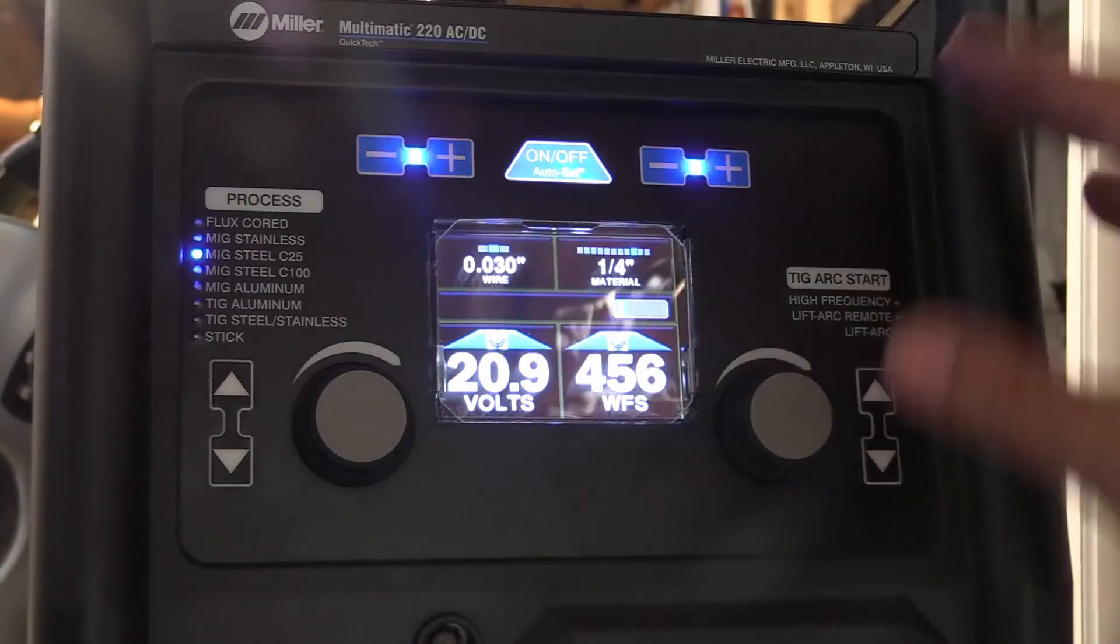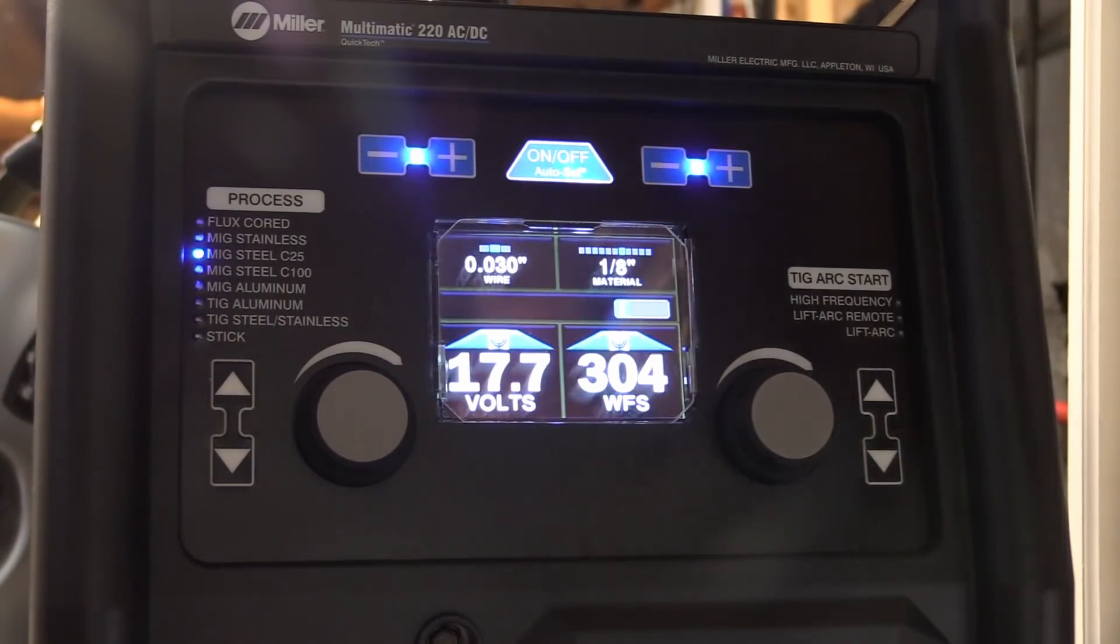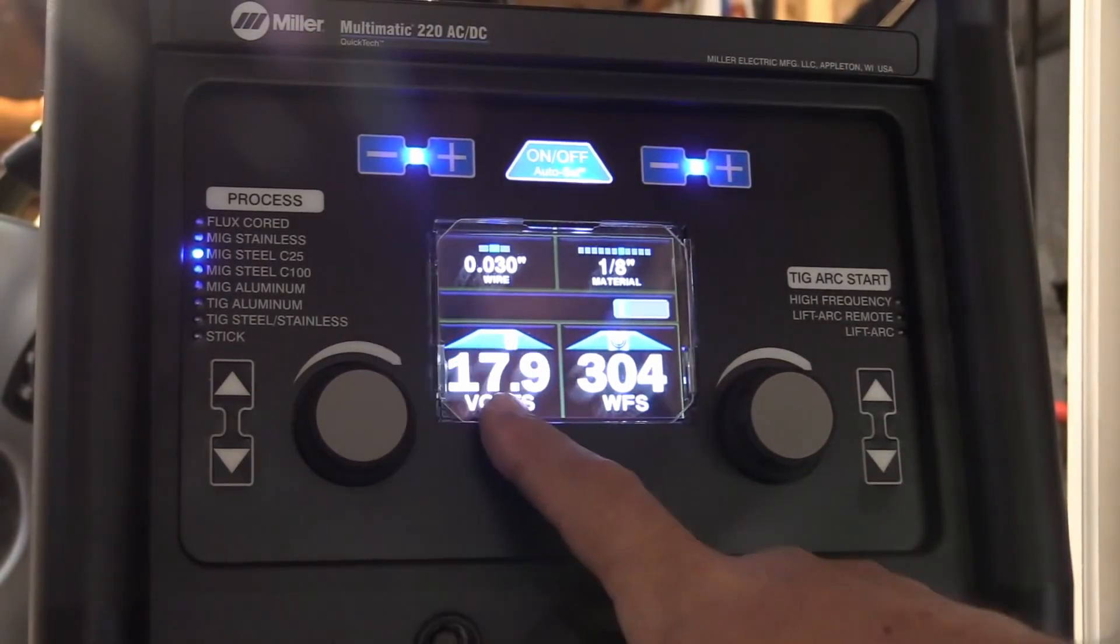So for vertical uphill instead of turning the auto set off, I'm just dropping down to the settings for one-eighth, 17.7 volts. Actually I tweaked it up 0.2 volts, I found that worked a little bit better, but 17.7 worked pretty good too.